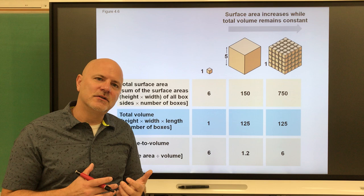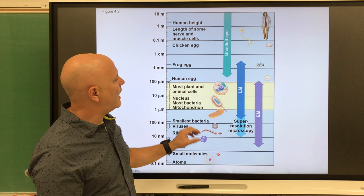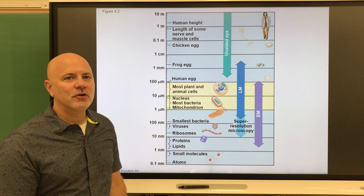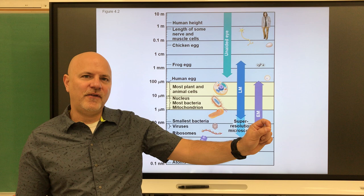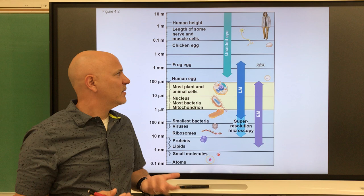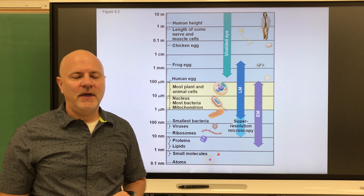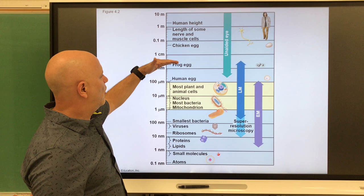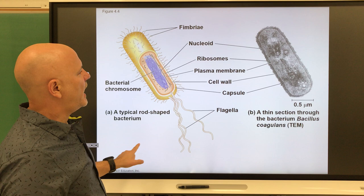There are ways around the size constraint. Instead of a cube shape, a cell can be very long and thin — like a neuron. The nerve cell at the end of my finger literally extends all the way to my spinal cord, so nerve cells can be a couple of feet in length but very thin. For more spherical or cube-shaped cells, about one millimeter is the maximum size.